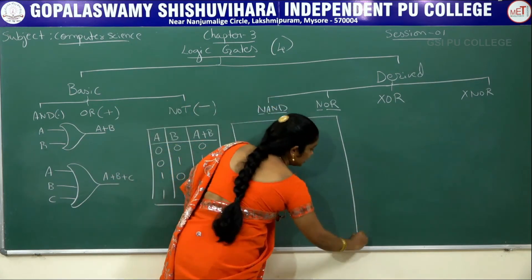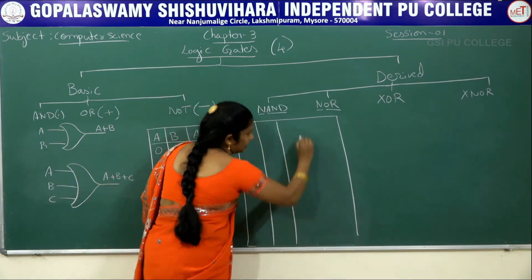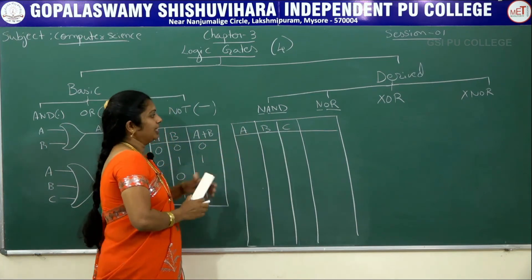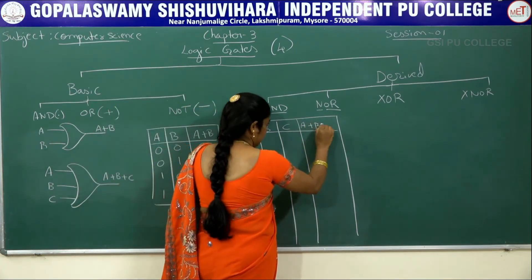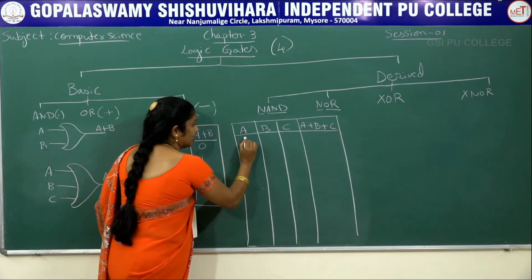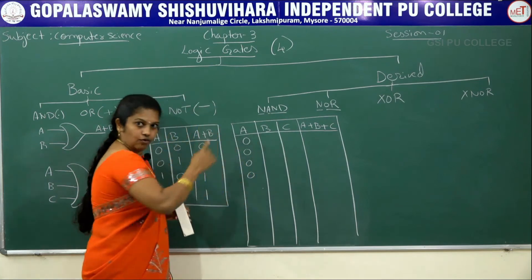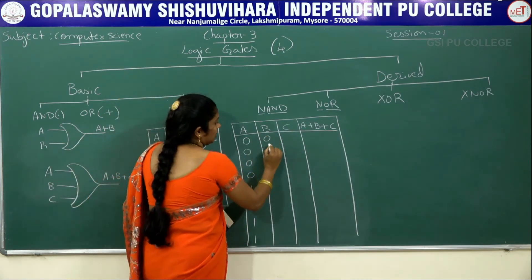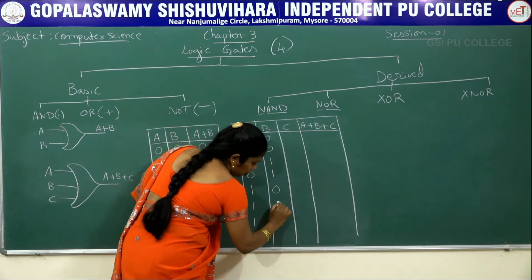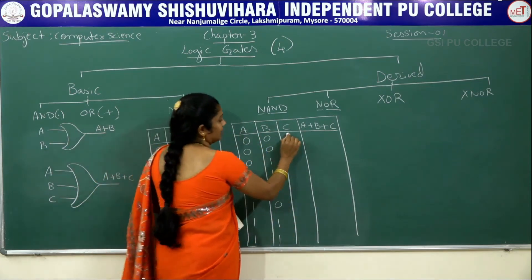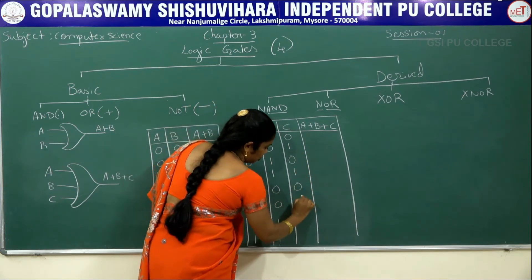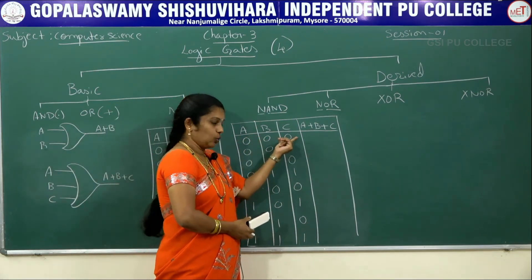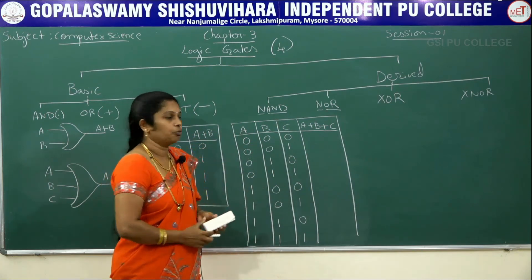In the same way we can write the truth table for three variables. Write A, B, C as three variables — the output is A plus B plus C. Four times 0, four times 1 for first variable; two times 0, two times 1 for second variable; alternate 0, 1, 0, 1 for third variable. In the first case 0+0+0=0 as all inputs are 0.